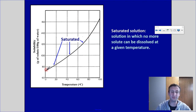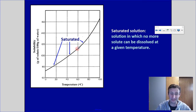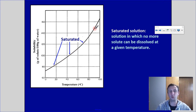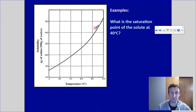So I would call that unsaturated — it hasn't reached its saturation point, the max amount of solute that would dissolve at that temperature. This curve represents how many grams will dissolve at a given temperature per 100 mils of water, up to the point where no more can dissolve and you have a saturated solution.